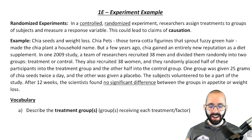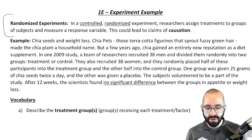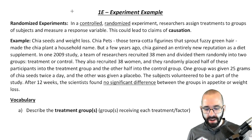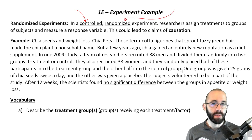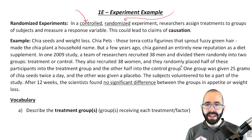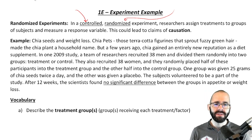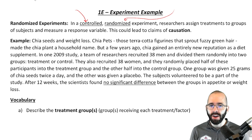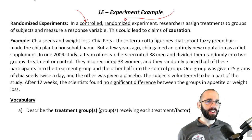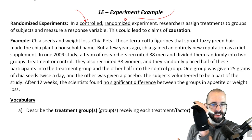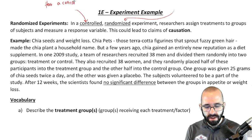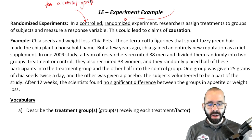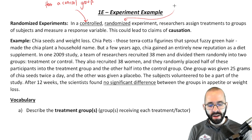We had the definition of random experiments from the last video. I want to talk about what it means for something to be a controlled experiment and a randomized experiment. 'Control' means it has a control group — not 'controlled' in the sense of controlling a marker. 'Randomized' means that each group is randomly assigned.